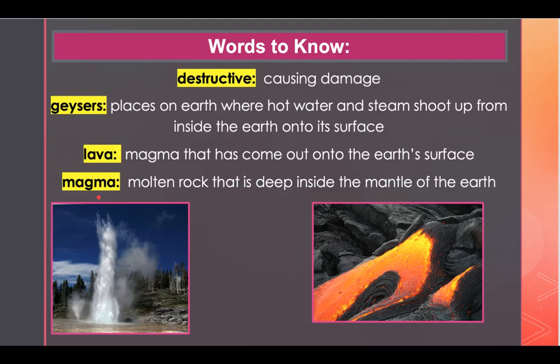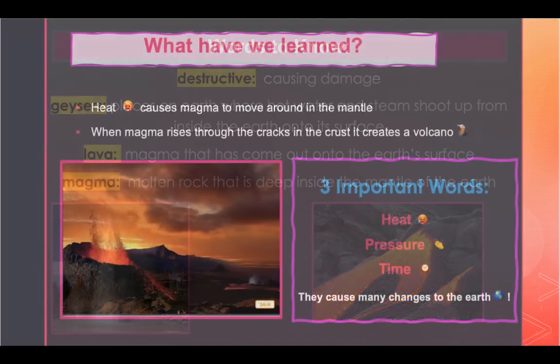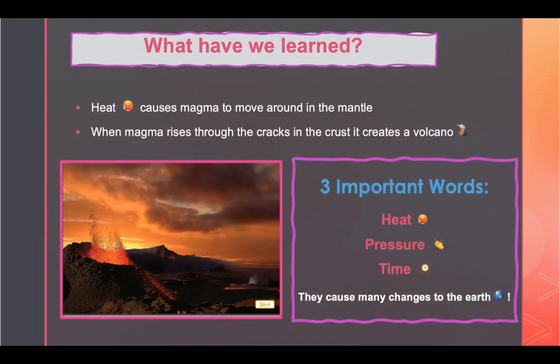Our last word to listen for is 'magma.' Magma is molten rock that is deep inside the mantle of the earth. An example of this is: the hot magma slowly made its way to the earth's crust.